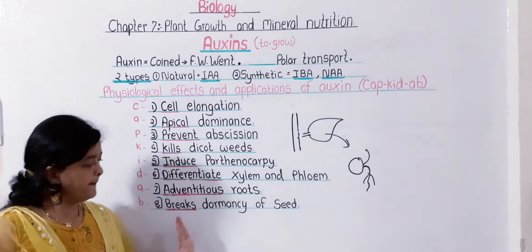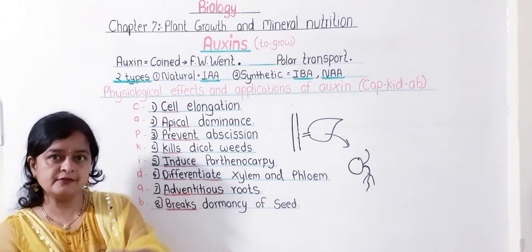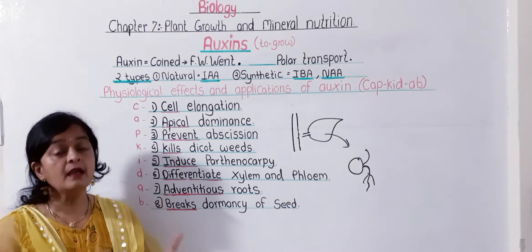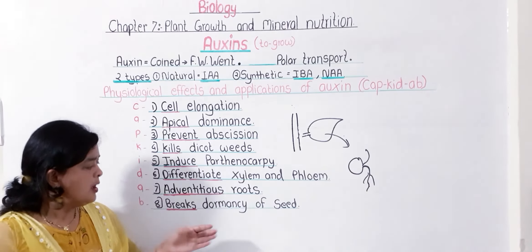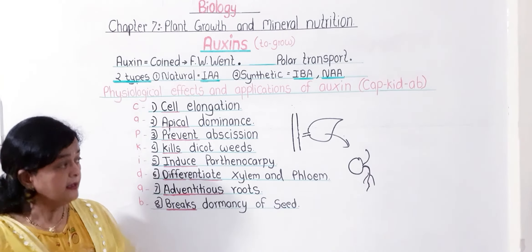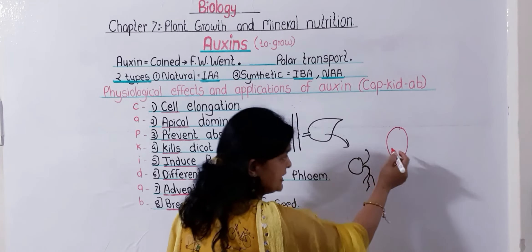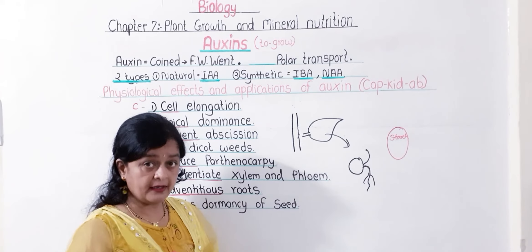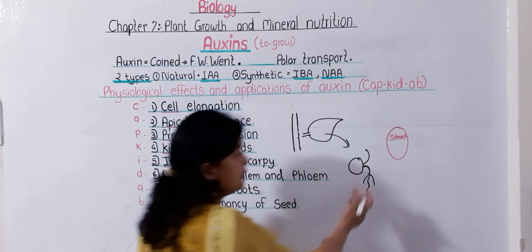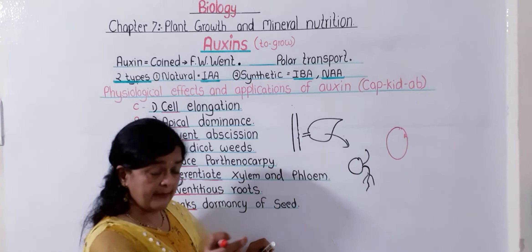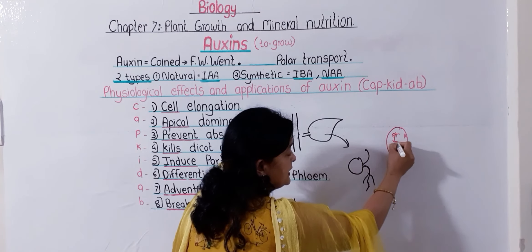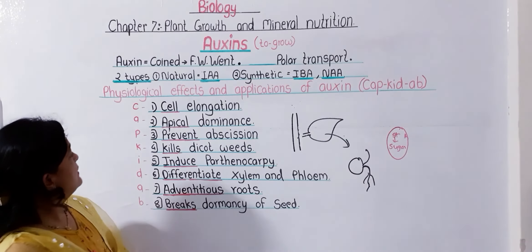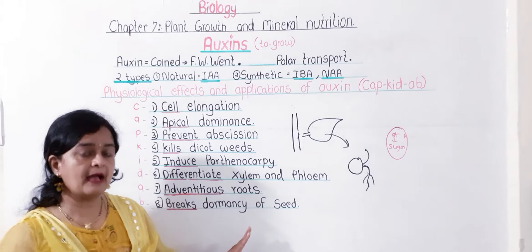The eighth function is that auxin breaks dormancy of seeds. When a seed is sown in soil, auxin plays an important role in germination. Inside the seed, starch is present as food, but the seed cannot use it directly. Auxin secretes an enzyme that converts starch into sugar, which is food for the seed, and the seed germinates. So here we have completed 8 functions or applications of auxin.